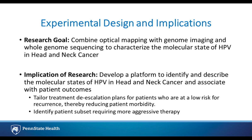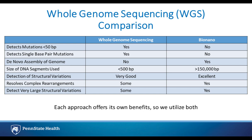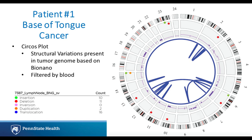Our question was whether we could combine optical mapping using BioNano as well as whole genome sequencing using the Illumina platform to characterize the molecular state of HPV in head and neck cancers — whether it's integrated or episomal. The implication is that we can develop a platform to identify the molecular state of HPV in these cancers and, associated with patient outcomes, improve treatment plans. Whole genome sequencing is better at detecting smaller mutations — less than 50 base pairs — based on small DNA fragments often less than 500 base pairs. BioNano uses DNA segments at least 150,000 base pairs in length, making it much better at detecting large and complex structural variants. Because each is better at different event sizes, we use both in our approach.